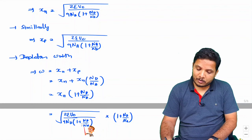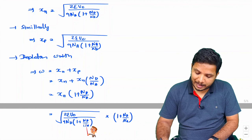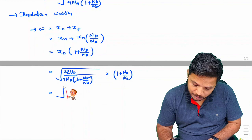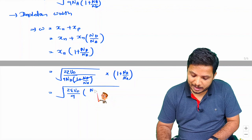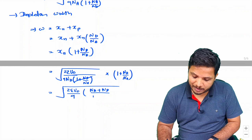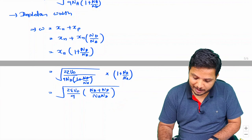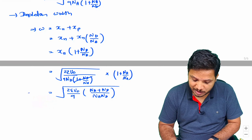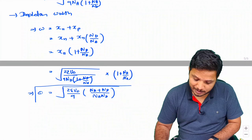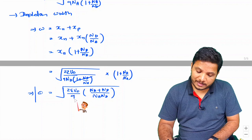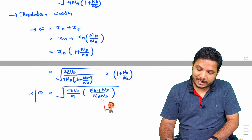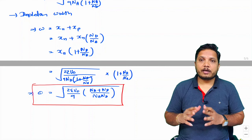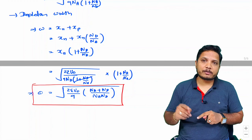Since the depletion width W = Xn + Xp, substituting Xp in terms of Xn and simplifying, the expression inside the square root becomes (Na + Nd)/(Na·Nd). Therefore, the final formula for the depletion width is: W = √[2ε·V0/Q · (Na + Nd)/(Na·Nd)]. I hope you understood this video; please place any queries in the comment box.